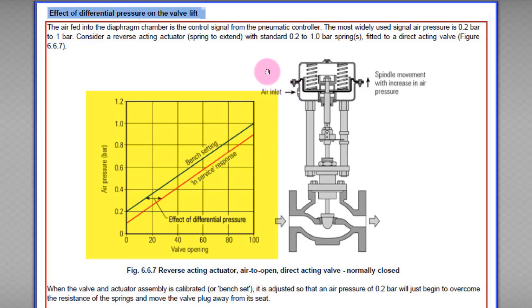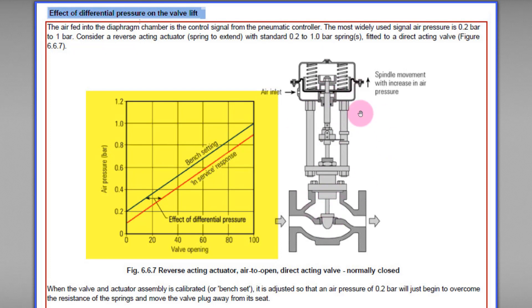When pressure reaches up to 1 bar or about 15 psi, the valve will be fully open. So if we apply the maximum pressure of 1 bar or 15 psi to the actuator, it pushes the actuator diaphragm to the maximum outward position, and the attached stems and valve plug move upward to fully open the valve.